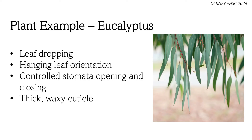Eucalyptus, as well as banksia plants, have thick cuticles that insulate water from excessive sunlight by reducing the internal temperature. By doing so, the thick cuticle reduces the rate of evaporation.